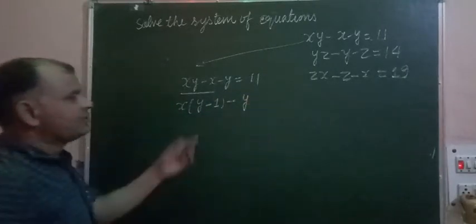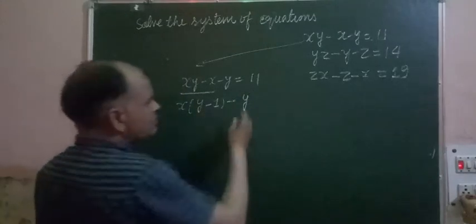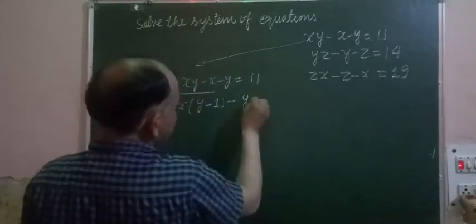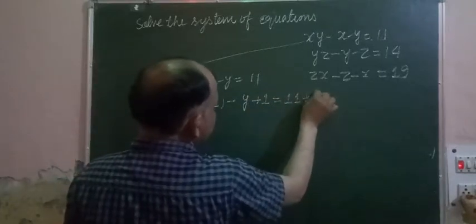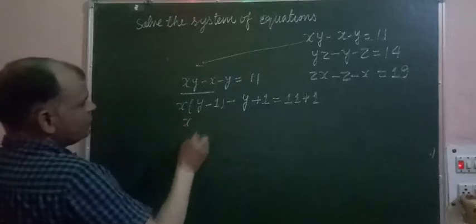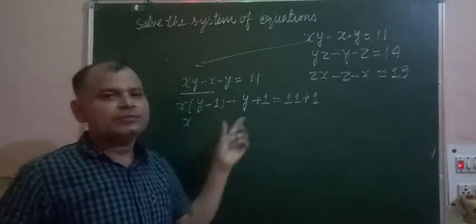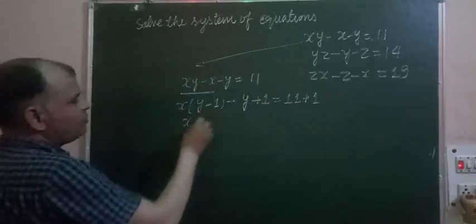We add 1 to both sides, so this becomes 11 plus 1, which is 12. We can arrange this as y - 1.